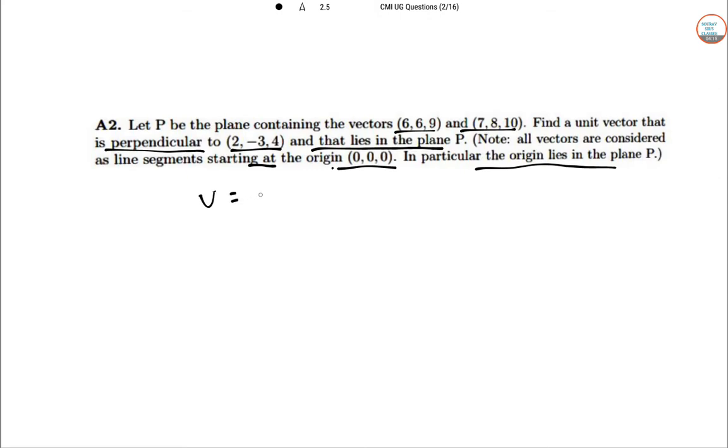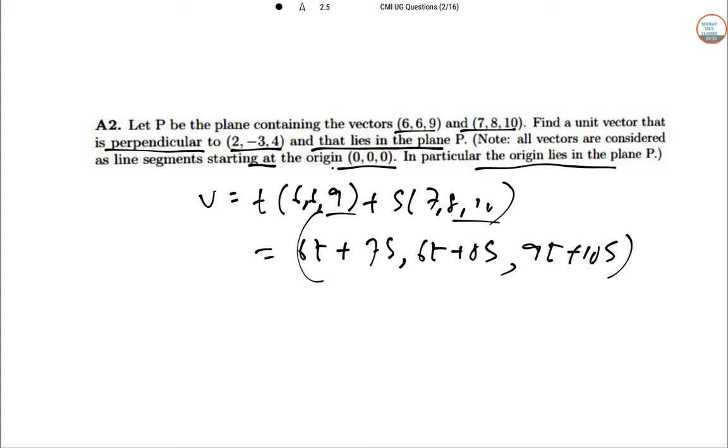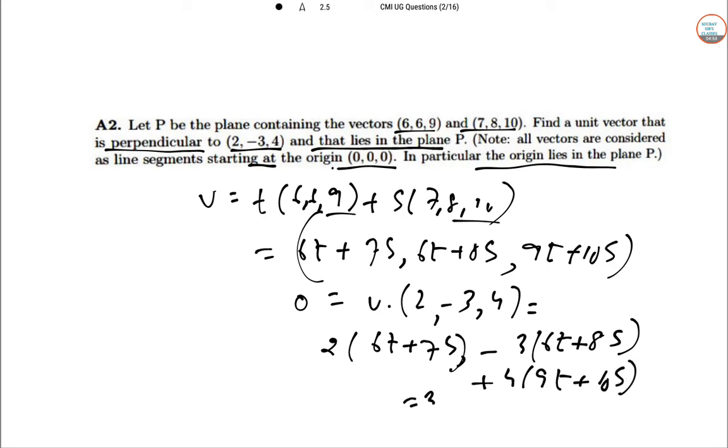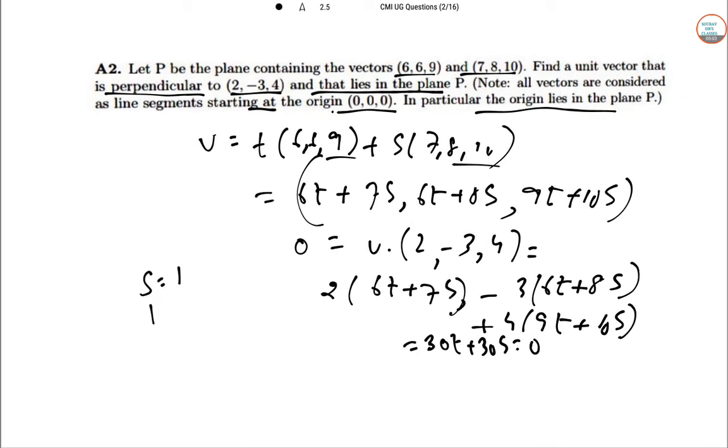So the desired vector is in the form V, so T into (6, 6, 9), S into (7, 8, 10). So this is 6T plus 7S comma 6T plus 8S and this is 9T plus 10S. So 30T plus 30S total and that is equal to 0. So taking if we take S equal to 1 and T equal to minus 1, we get the answer as 1, 2 and 1 and scaling it to a vector will give you this value plus minus 1 by root 6, 2 by root 6 and also 1 by root 6.